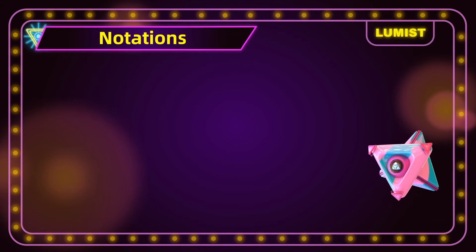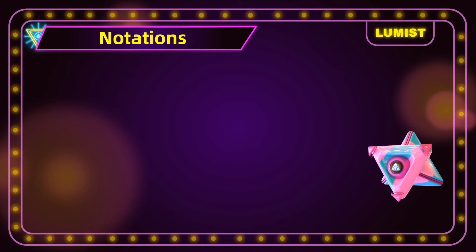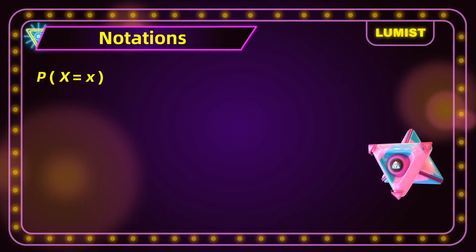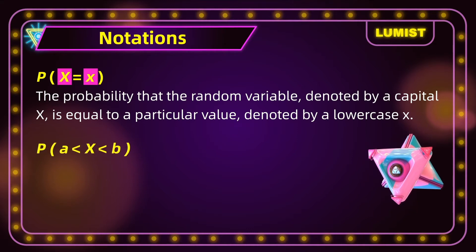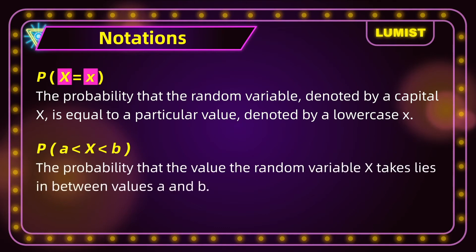Let's familiarize ourselves with the mathematical notations used when working with random variables. The notation used in association with random variables is P(X = x). This refers to the probability that the random variable, denoted by capital X, is equal to a particular value denoted by lowercase x. Another notation looks like this: P(a < X < b). This basically states the probability that the random variable X takes a value lying between a and b.